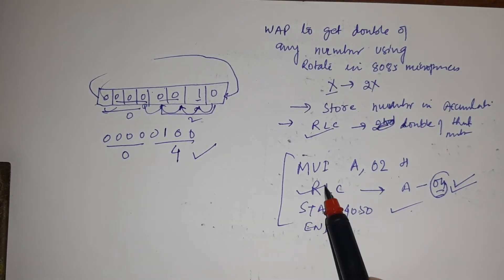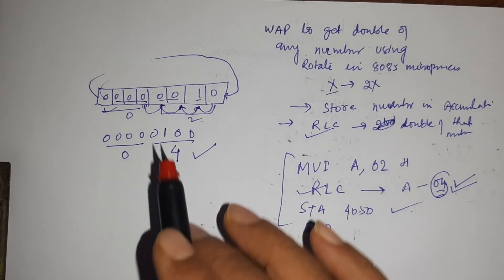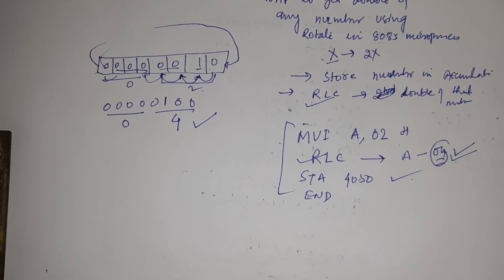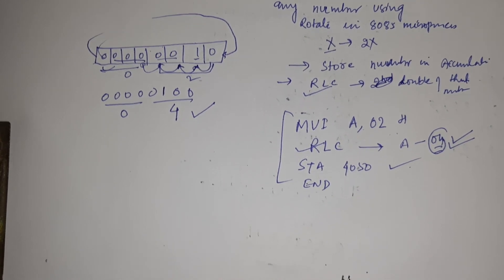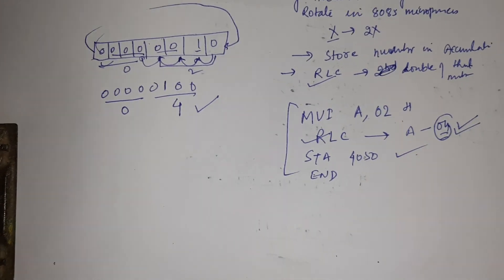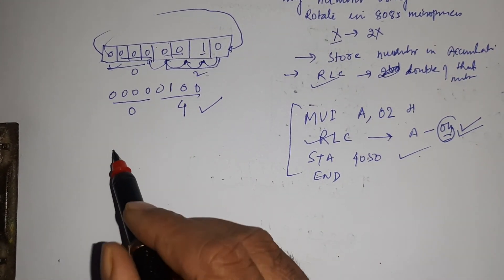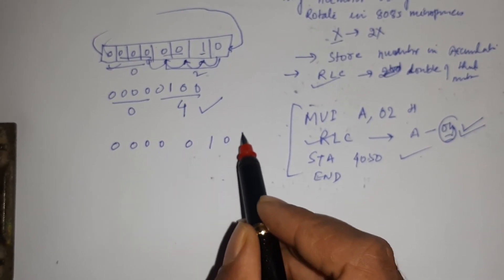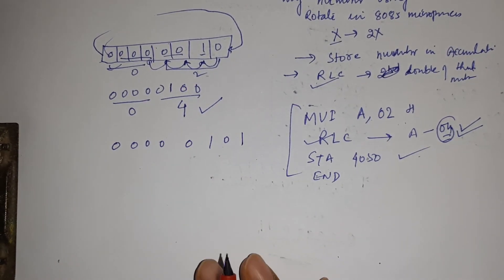Also, you can check by taking another example. Suppose I have taken example 05, so here 05 means 00000101.